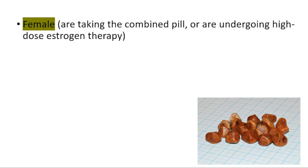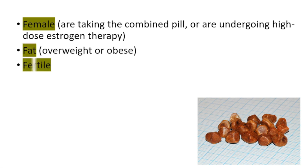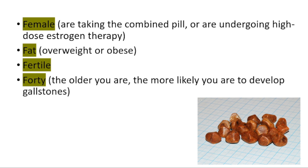Now we can talk about the risk factors. We have four F's. The first one is female — especially women who are taking combined contraceptive pills or women who are undergoing high-dose estrogen therapy — are more likely to have gallstones. The second one is fat, being overweight or obese. The third one is being fertile, which increases your risk for gallstones. The fourth one is 40 — being older than 40. The older you are, the more likely you are to develop gallstones.